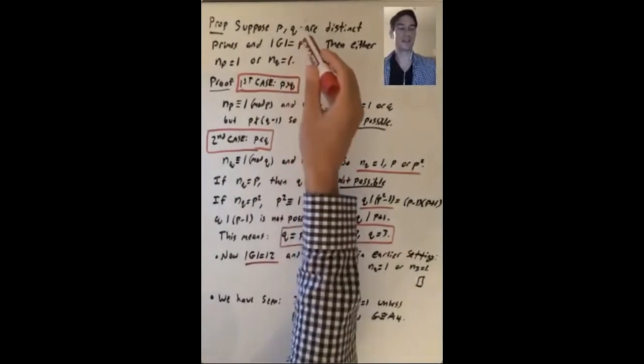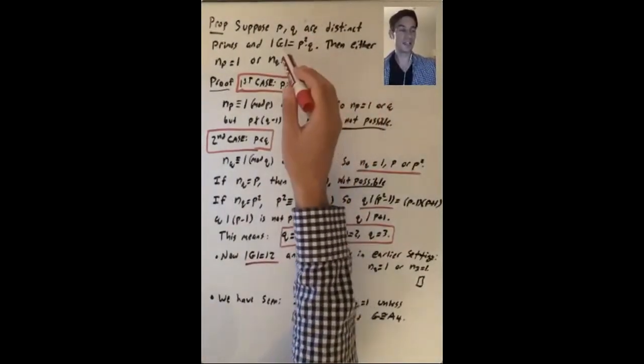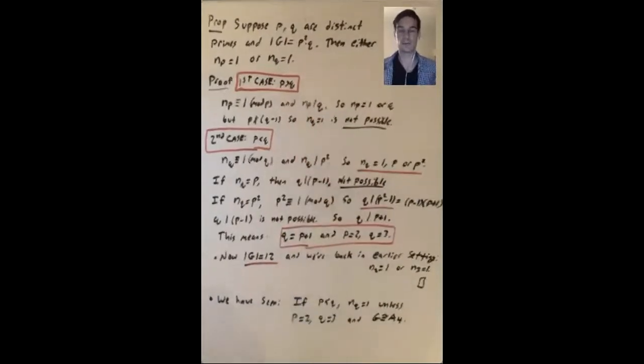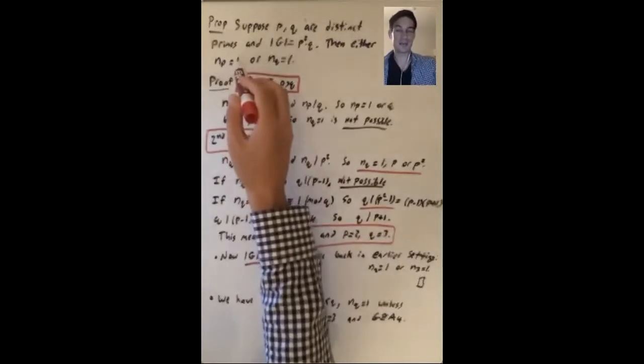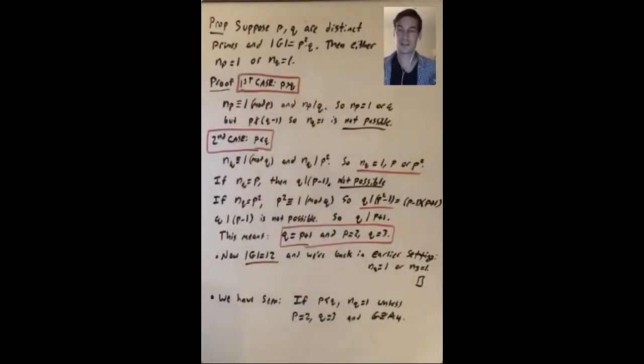Let's suppose that p and q are distinct primes, and g is a group of order p squared times q. We're going to prove that either np equals 1 or nq equals 1. So g must either have a normal Sylow p subgroup or a normal Sylow q subgroup, or maybe both.